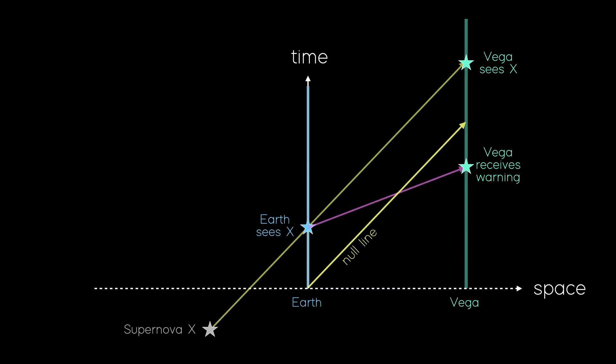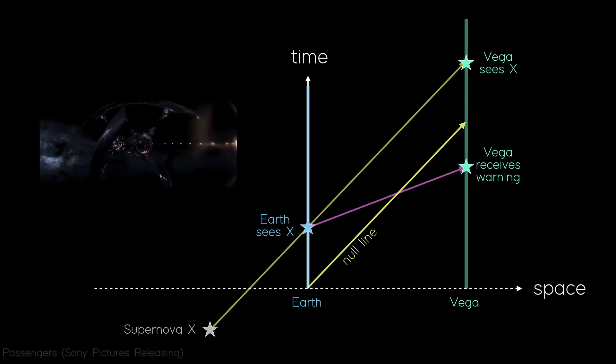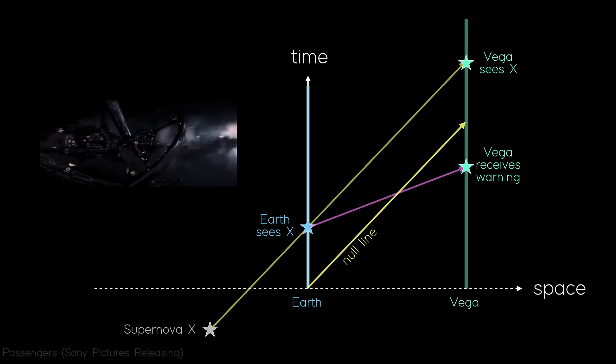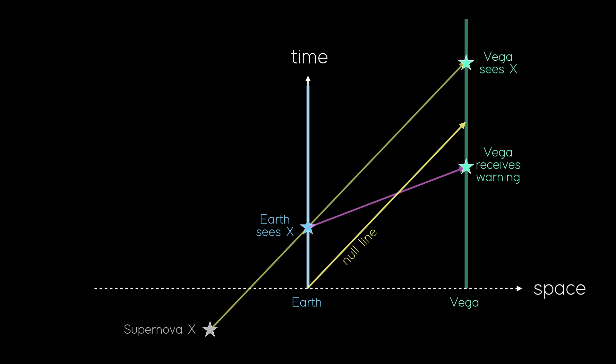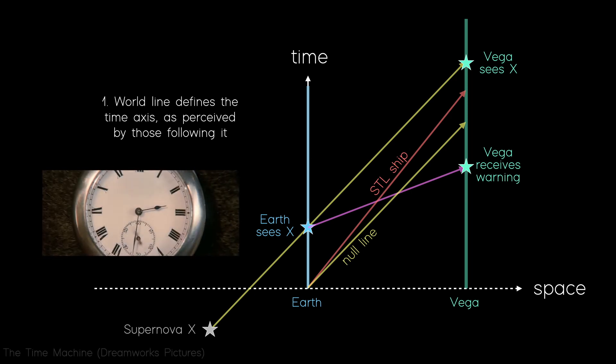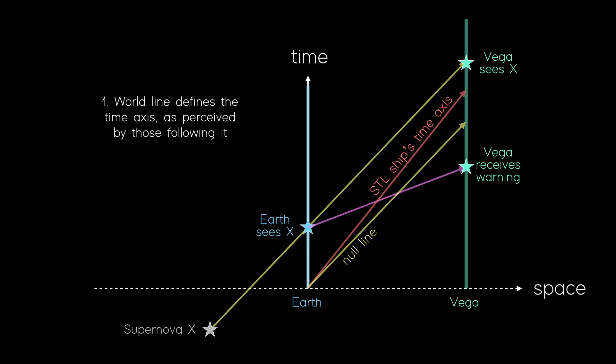Okay, so coming back to our diagram, we currently have no STL ships on here. Just Earth, Vega, X, and the FTL message shown in pink. STL ships have to follow world lines above the null as shown here in red. Now, remember our rules from before. The world line defines the time axis as perceived by those following it. So the time axis as perceived by the crew of that ship actually lives along that red line. It's not the same as the Earth's time axis in white.